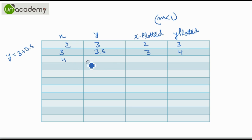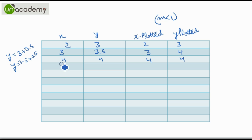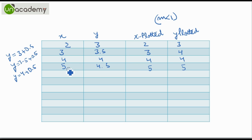Now x is incremented and the new y is calculated as 3.5 plus 0.5, that is 4. So the point (4, 4) will be plotted. x is incremented by 1 and the new y is calculated as 4 plus 0.5, giving 4.5. Rounding off, we get the point (5, 5). We increment again and the new y is 4.5 plus 0.5, that is 5. So (6, 5) will be plotted.